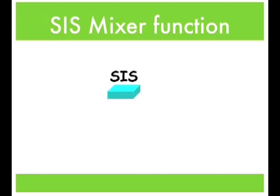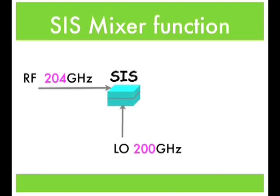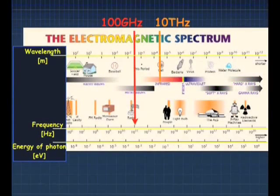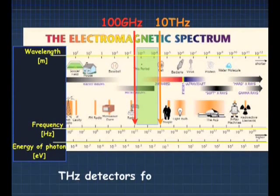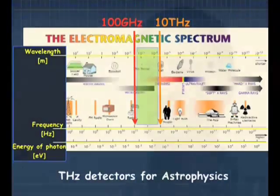SIS mixers are extraordinary devices, but they have a disadvantage: they can't work above a frequency of about 700 GHz. In fact, this is only about halfway across the THz frequency range, meaning that by using superconducting tunnel junctions we still don't get access to a considerable amount of astrophysics that we would like to. So how do we make detectors which operate at frequencies above the energy gap of a superconductor?